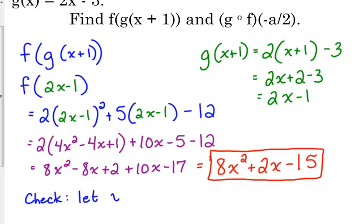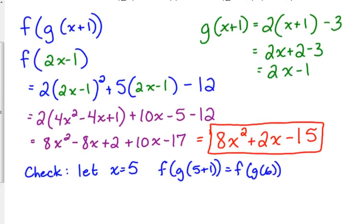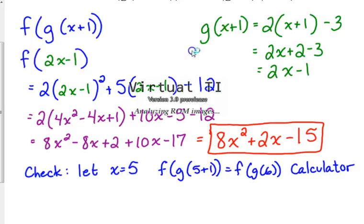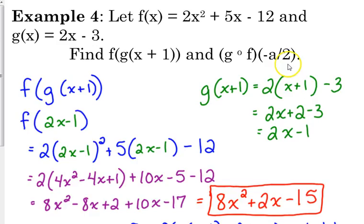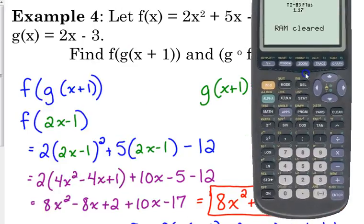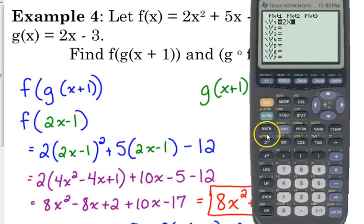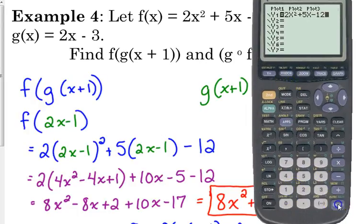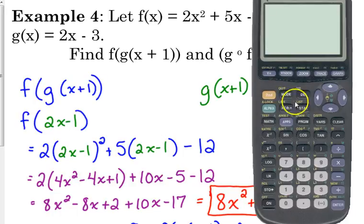So you would do f of g of 5 plus 1, which is f of g of 6. Do that in your calculator. The way that we did it yesterday. Let me remind you of how we did that yesterday. We put f in y1. 2x squared plus 5x minus 12. We put g in y2.